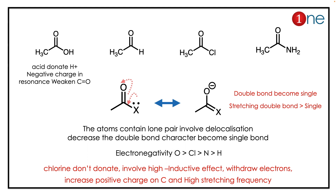The key concept here is carbonyl strength — the double bond strength decides the stretching frequency. Electron-donating atoms weaken the double bond character and lower the frequency, while electron-withdrawing groups increase the double bond character and raise the stretching frequency.